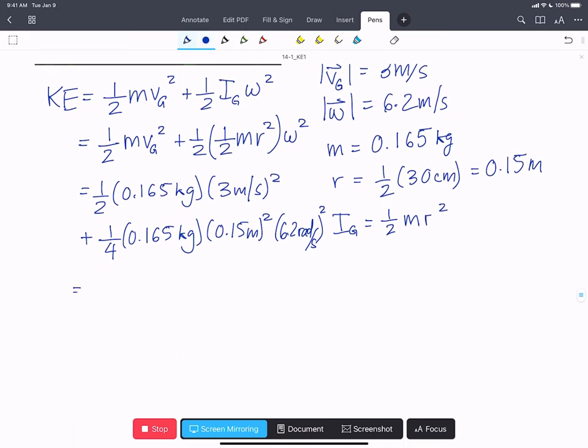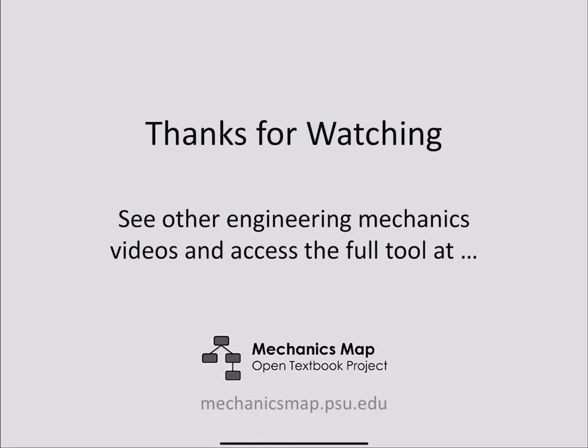And if we do that out, we find that kinetic energy equals 0.778 joules for the frisbee at this instant. Thanks for watching this video.